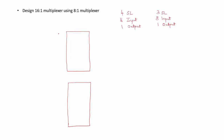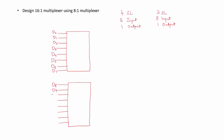The first 8-to-1 MUX will have 8 data lines: d0, d1, d2, d3, d4, d5, d6, d7. The second 8-to-1 MUX will also have 8 data lines: d8, d9, d10, d11, d12, d13, d14, and d15.